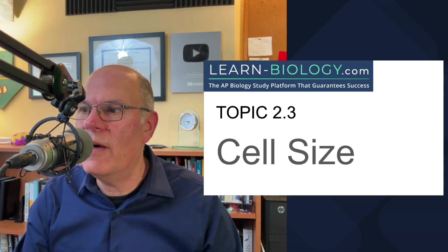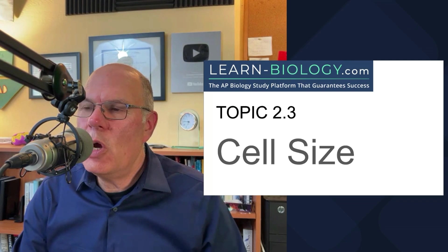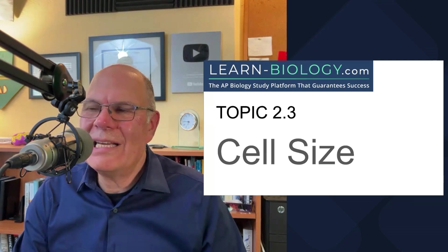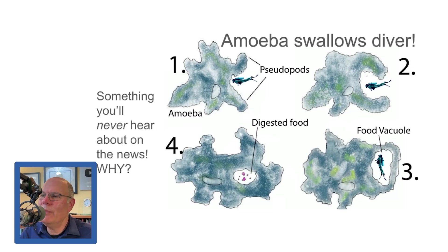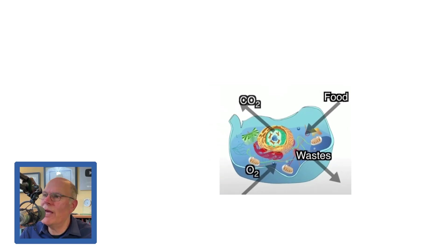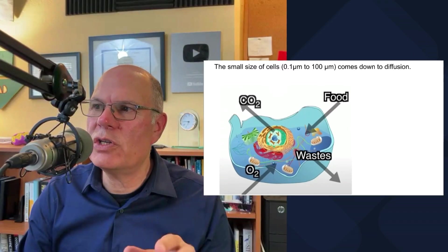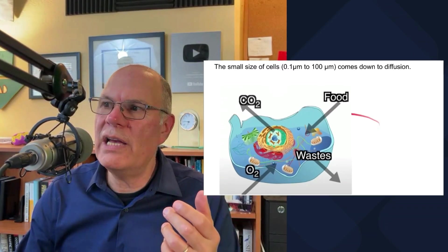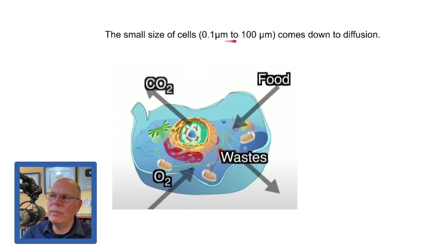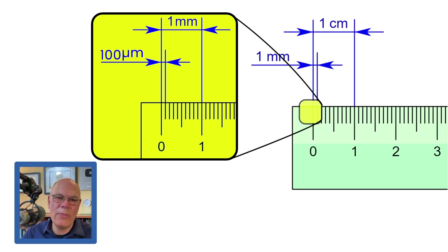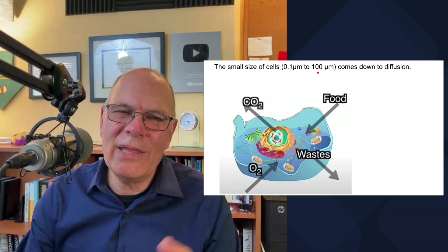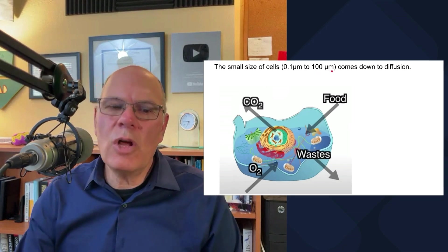Let's move on to the issue of cell size. We started by asking why there aren't gigantic cells — like an oceanic amoeba capable of swallowing up a scuba diver. Cells are small, ranging from about 0.1 micrometers to about 100 micrometers. 100 micrometers is one-tenth of a millimeter — pretty small. A millimeter is clearly visible; one-tenth of a millimeter is just barely visible.